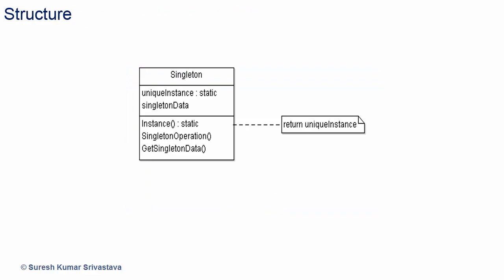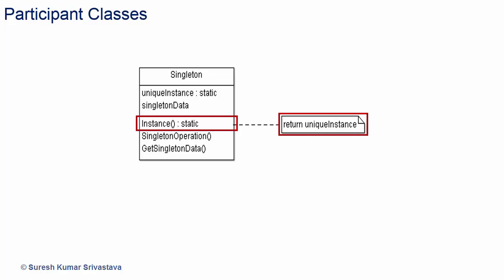Let's see the structure of the singleton design pattern, which will give you a good understanding of participant classes, the relationship between classes, and how all of them work together. We have only a singleton class here. It has the responsibility to create a single instance and provides instance access to multiple clients. It has a static method instance which can have logic to create a single instance and is the access point for providing the instance to multiple applications. The class has a static data member unique_instance to keep the instance information.